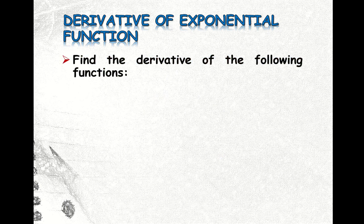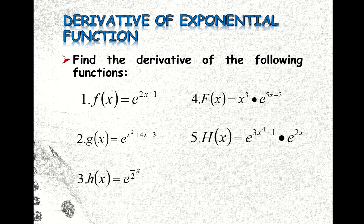So now we have here some examples, find the derivative of the following functions. We are given here, number 1, f of x equal to e to the 2x plus 1, and the other one is g of x equal to e to the x squared plus 4x plus 3, and the third one is h of x equal to e to the 1 half x. Then we have here number 4 and number 5 items for our exercises. So I will show you the solution to these exercises in our next video.